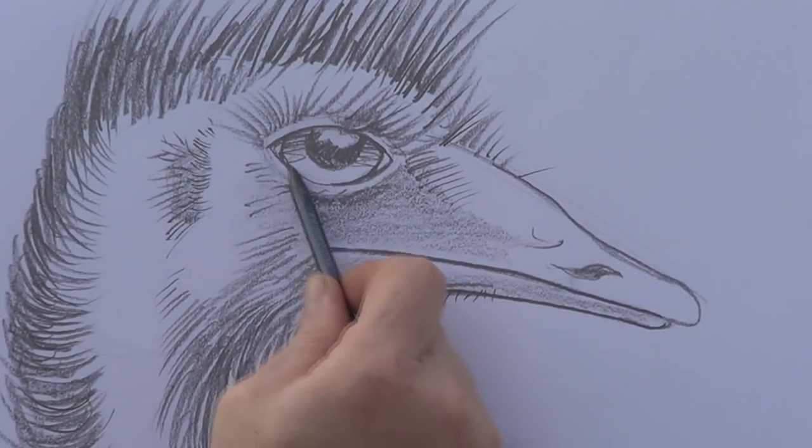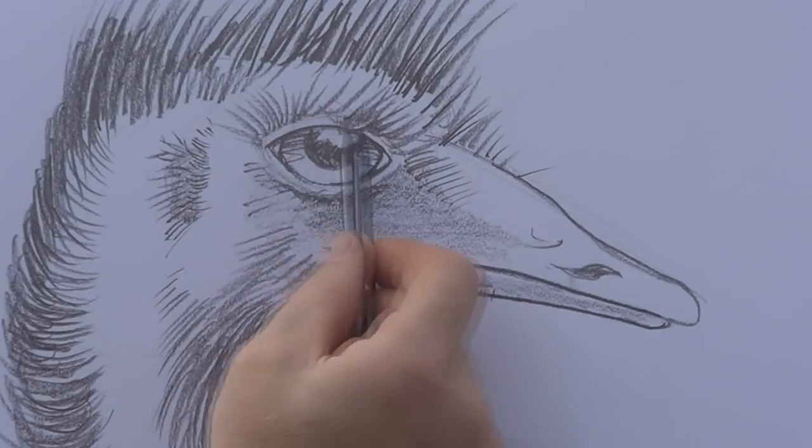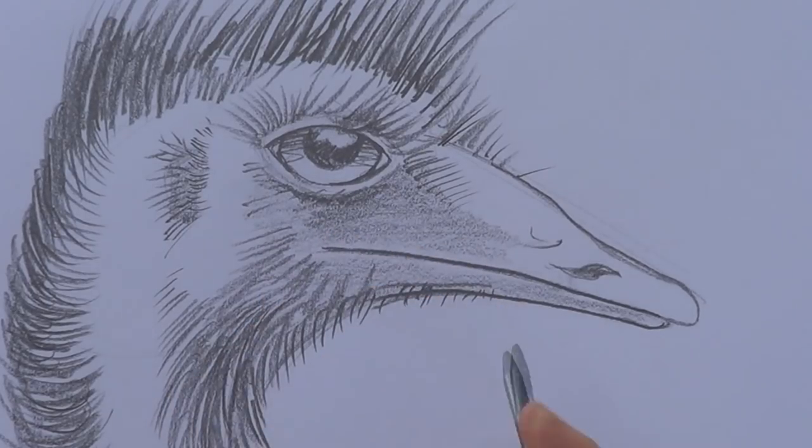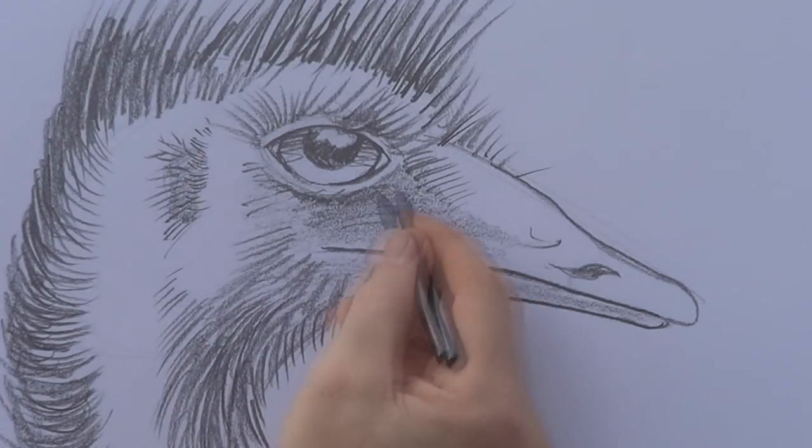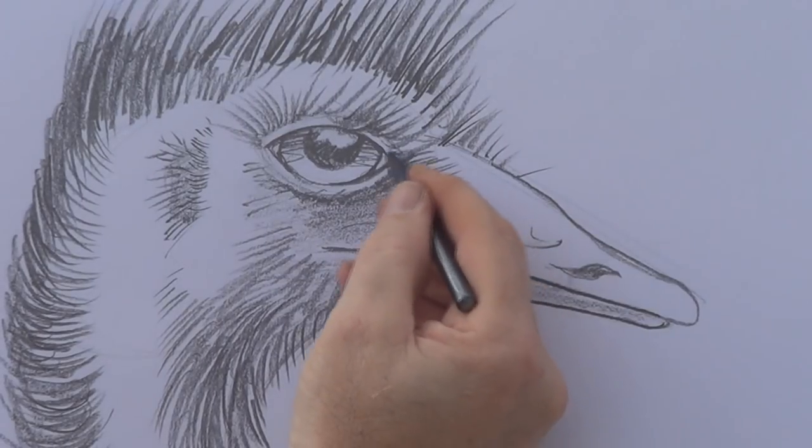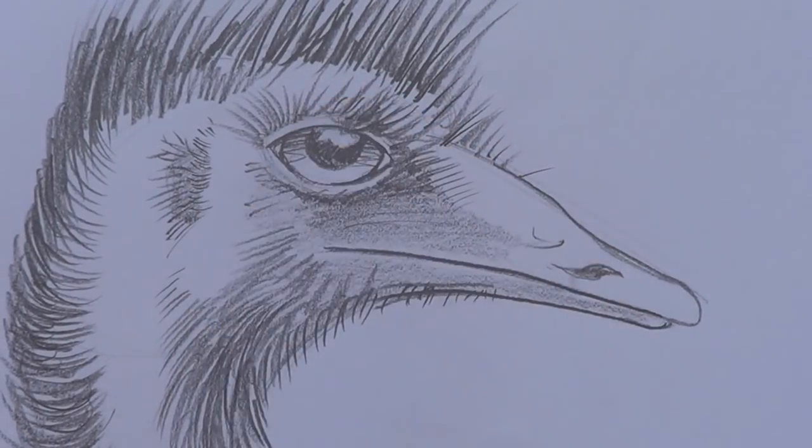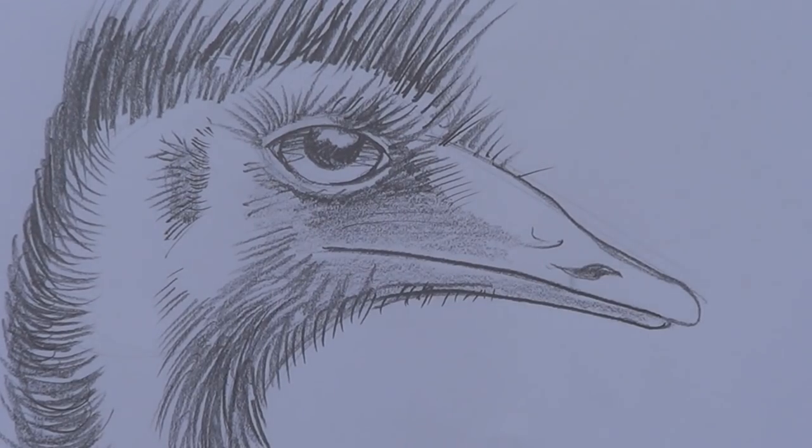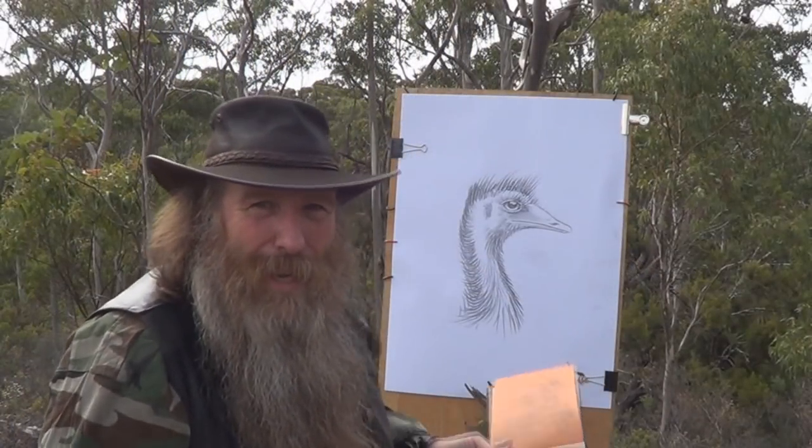Darken there a bit. See how I just scribbled that in. Sometimes if you can get away with a bit of scribble, make it look good. Goes a long way. That's how you draw an emu. Hope you guys have enjoyed this video.